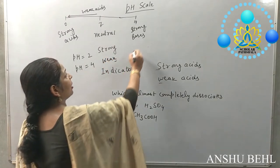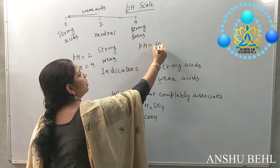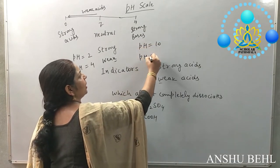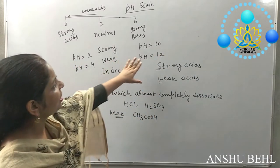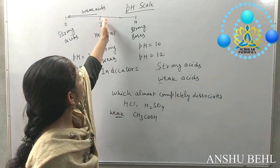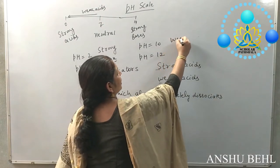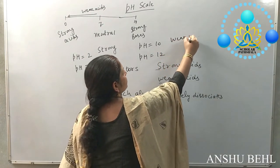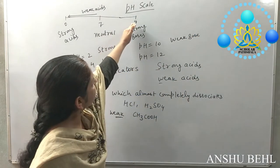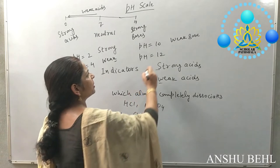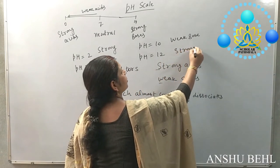Similarly, if you have two bases, one with pH 10 and another with pH 12, the substance with pH 10 is near the neutral side — it is a weak base. The one with pH 12 is towards the strong base side, so it is a strong base.